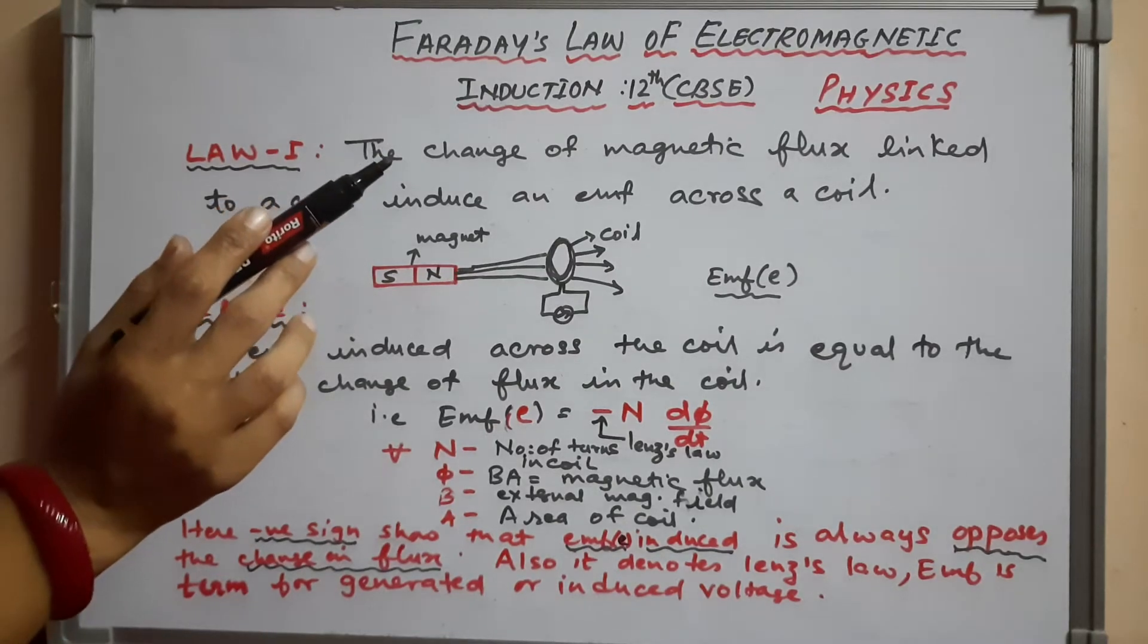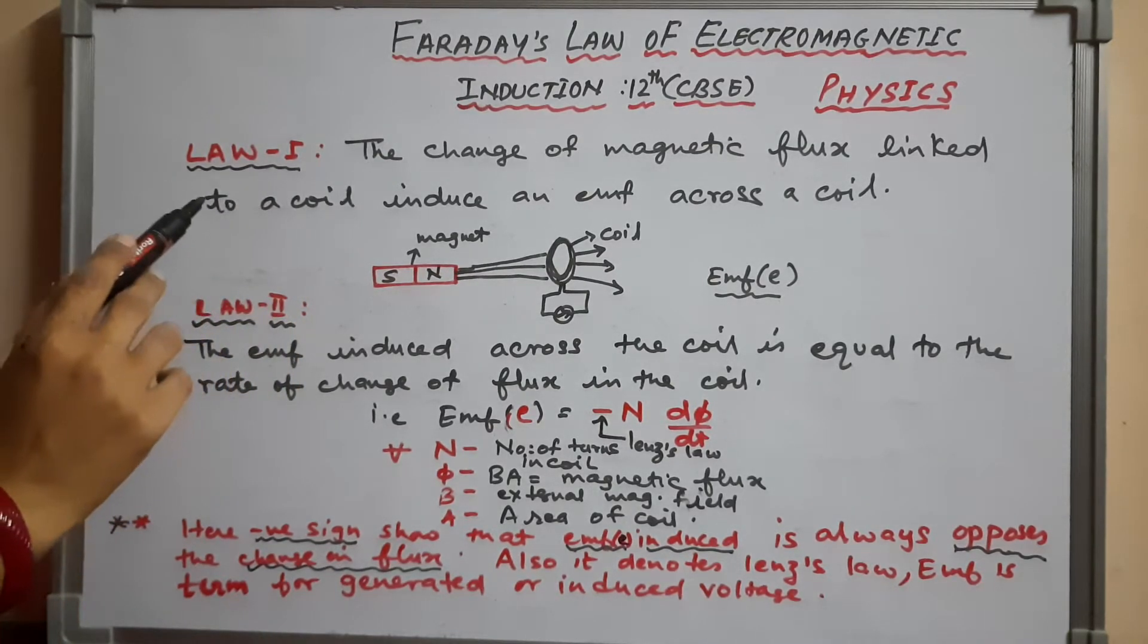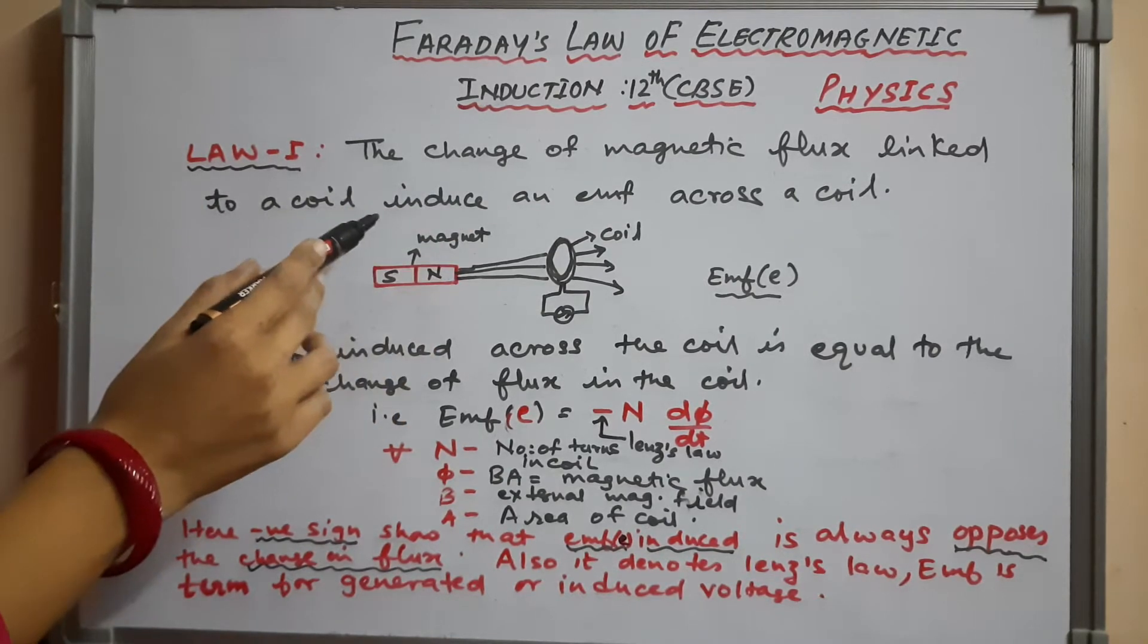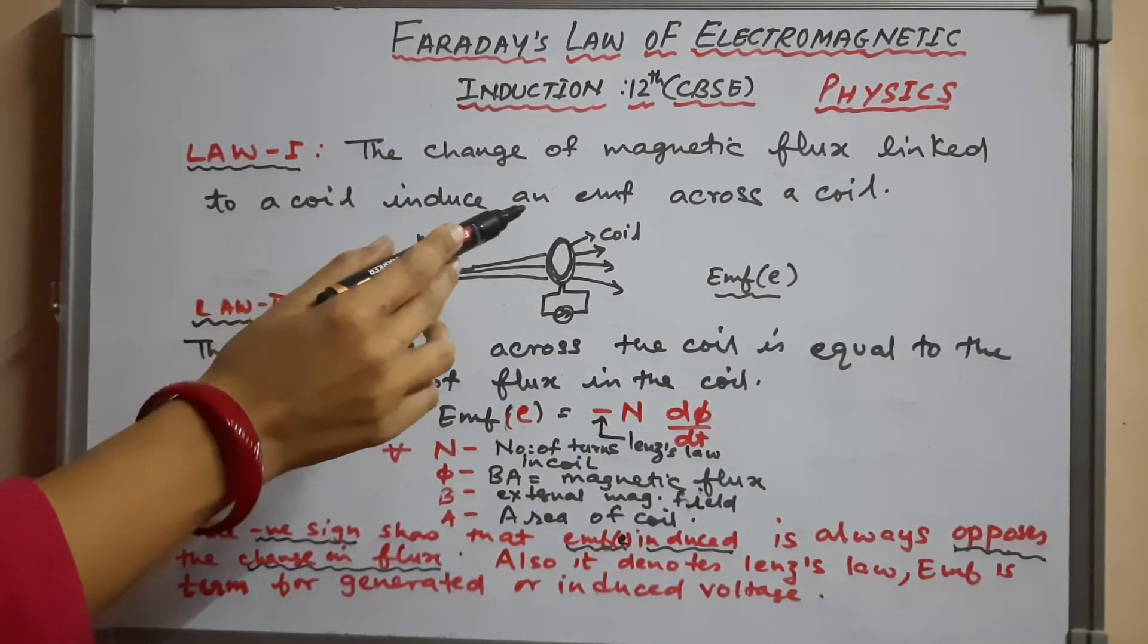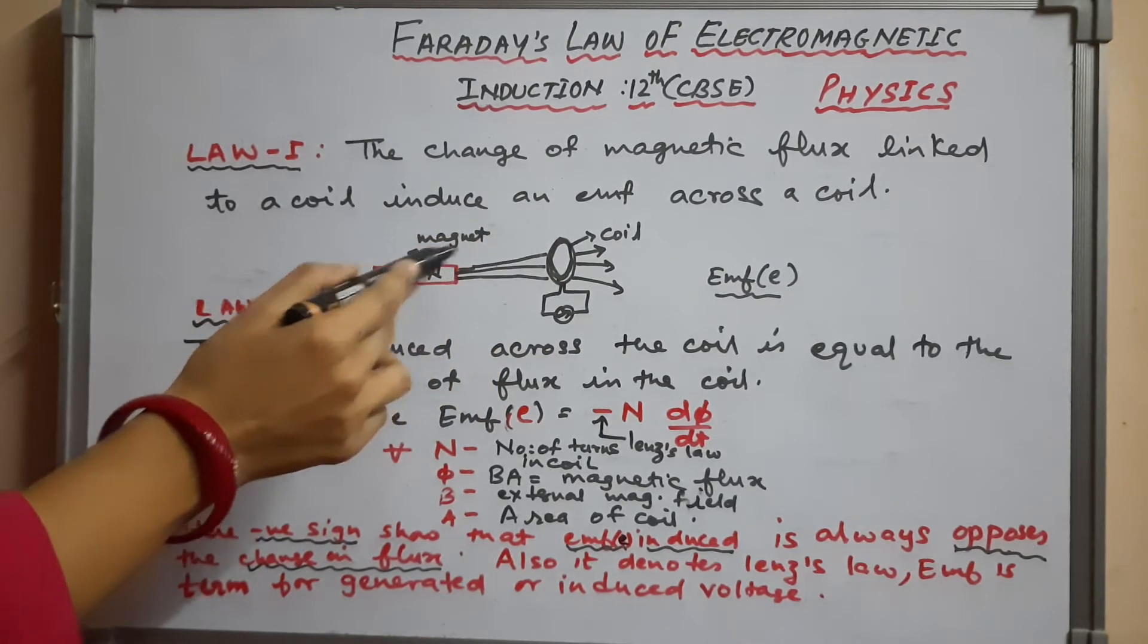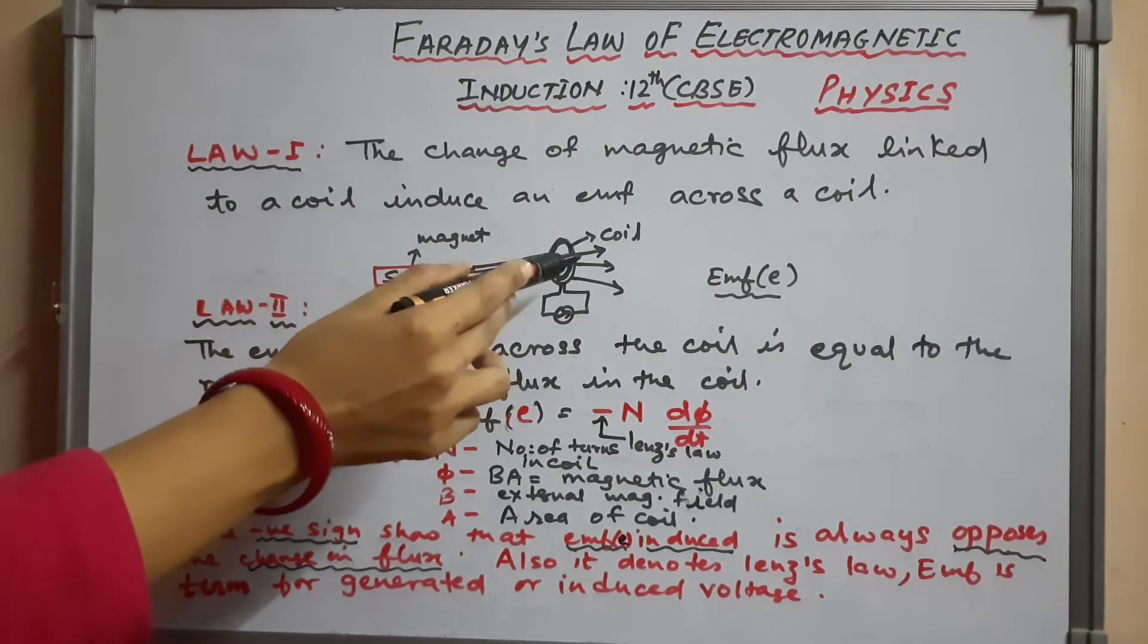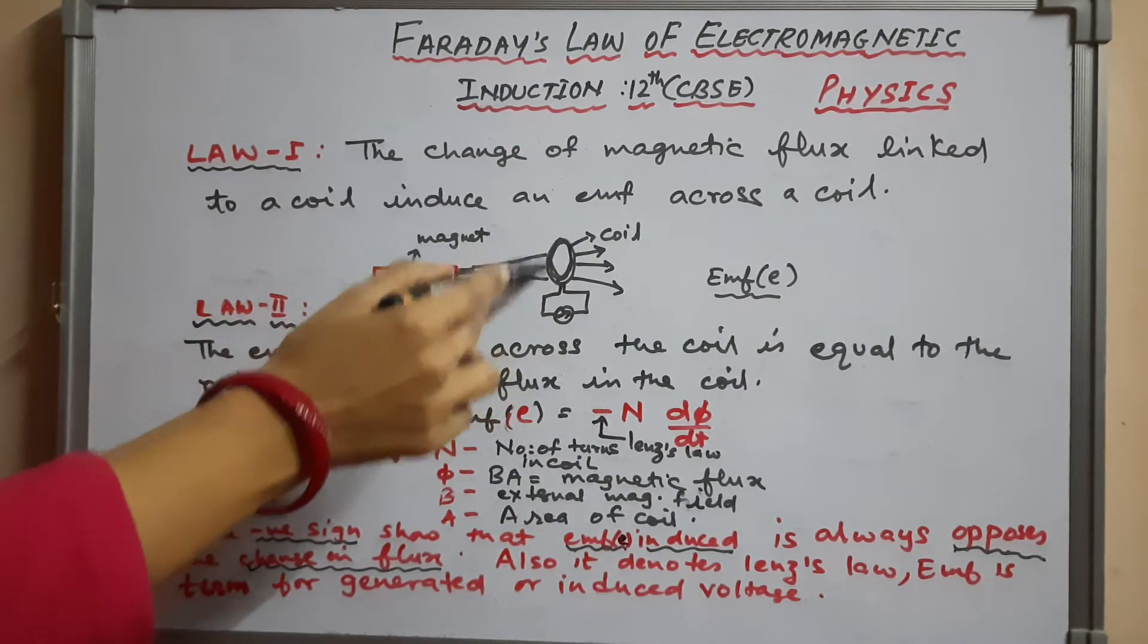Faraday's law of electromagnetic induction, Law 1: The change of magnetic flux linked to a coil induces an EMF across the coil. So here is the magnet and this is our coil—it induces an EMF across this coil.